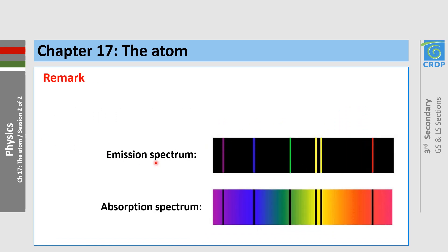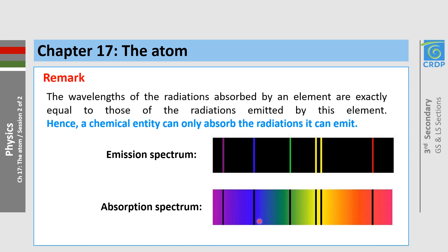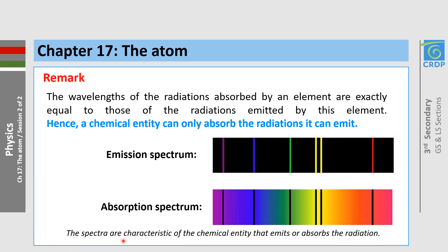If we compare the emission spectrum and the absorption spectrum of an element, we can see that the wavelengths of the radiations absorbed by the element are exactly equal to those emitted by this element. Therefore, a chemical entity can only absorb the radiations it can emit, and we can say that the spectra are characteristic of the chemical entity that emits or absorbs the radiation.